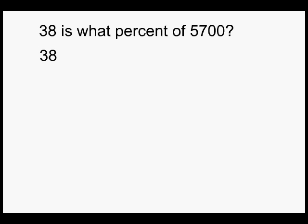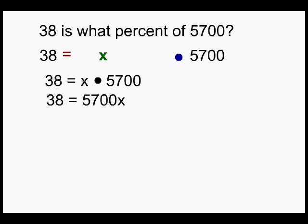38 is what percent of 5700? 38 'is' equals, 'what percent' is X, 'of' means multiply, 5700. We're going to put it all together, and now to get X by itself we need to divide by what's in front of the X, which is 5700.